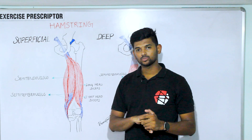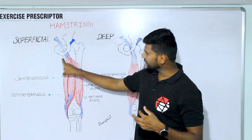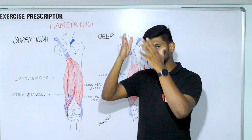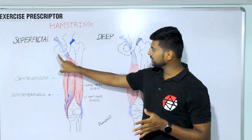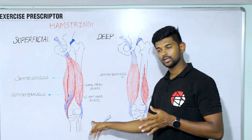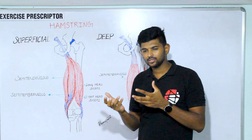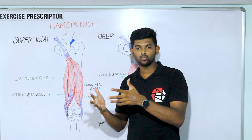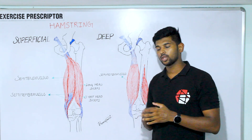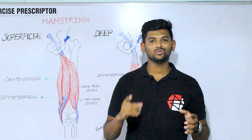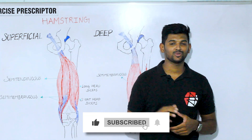Compared to semitendinosus and semimembranosus, the reason biceps femoris is most commonly injured is that semitendinosus and semimembranosus originate medially and insert medially, so their fibers run in a pure vertical manner. But biceps femoris originates medially and inserts laterally, so the fibers are not purely vertical — they are slightly oblique. That is the reason hamstring strain injuries happen more commonly to the biceps femoris long head. Hope you learned something new — don't forget to share and like this video. Happy learning, see you in the next video, bye!